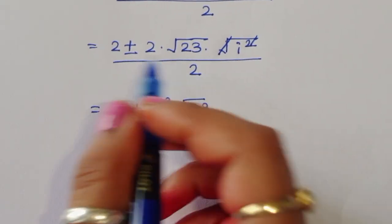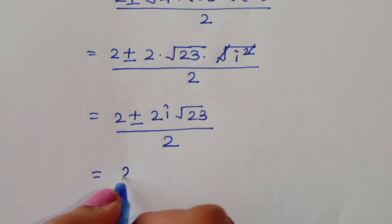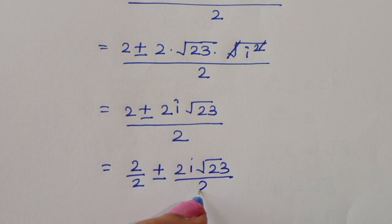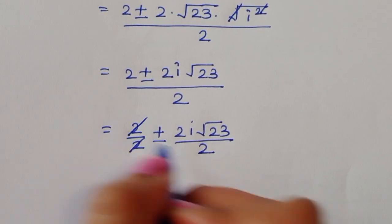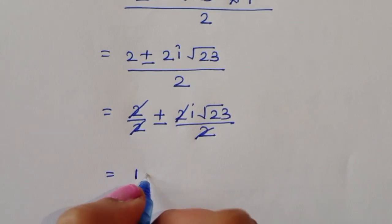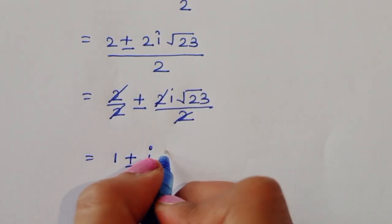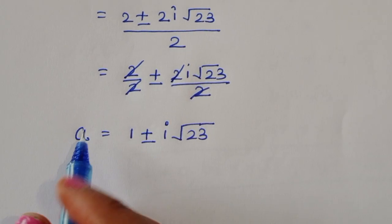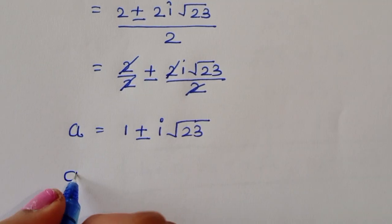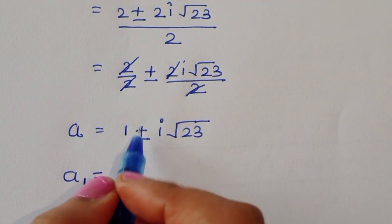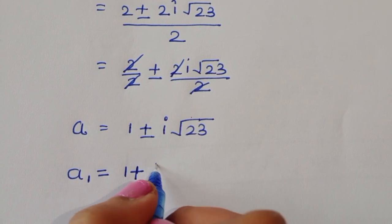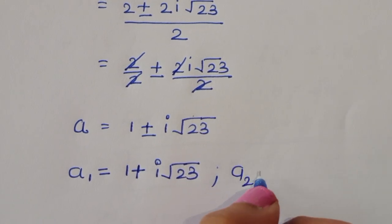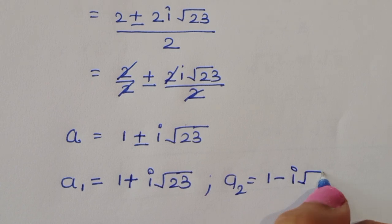Dividing each term by 2: 2 divided by 2 plus or minus 2i root 23 divided by 2, which simplifies to 1 plus or minus i square root of 23. So a1 equals 1 plus i root 23, and a2 equals 1 minus i root 23.